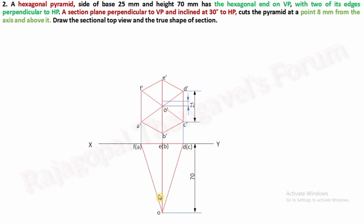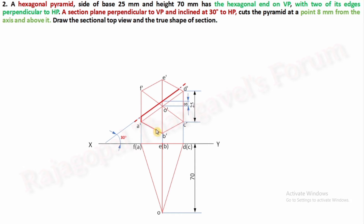The simple position is now completed. Check the section plane condition: section plane perpendicular to VP, inclined at 30 degrees to HP, cutting the pyramid at a point 8 mm from the axis above it. Take the apex or vertex point o' as the axis reference — 8 mm above it. From o', draw an 8 mm distance and fix the section plane travelling point. This 30-degree inclined line must travel through the point 8 mm above the apex o'. Convert this into the section plane and the remaining portion of the solid into thick lines.